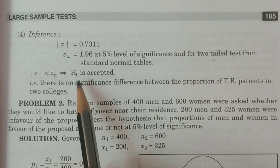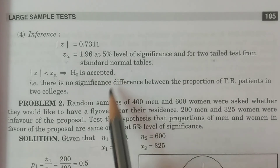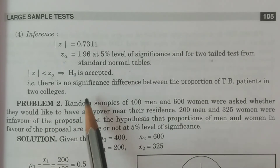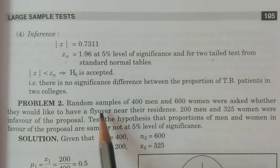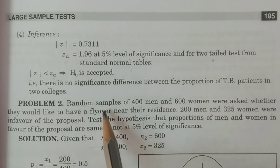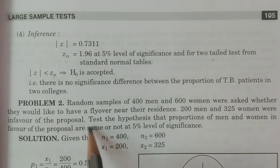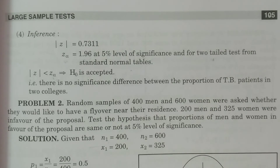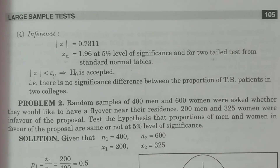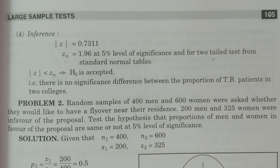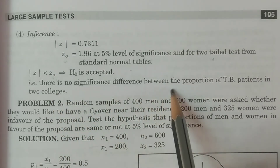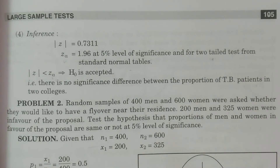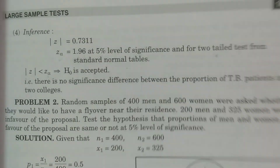Since modulus of Z is less than Z-alpha, H-naught is accepted. Conclusion: there is no significant difference between the proportion of TB patients in the 2 colleges. This completes the calculation of the test procedure for this problem.